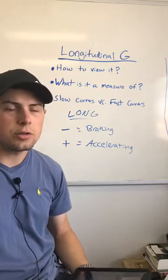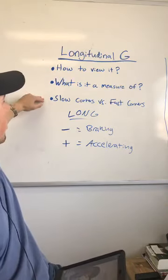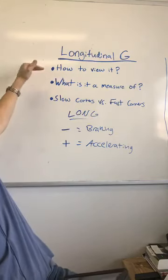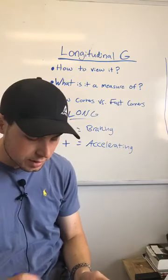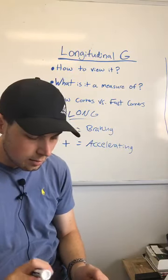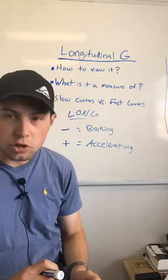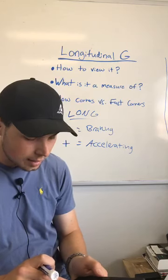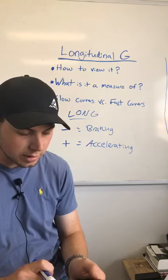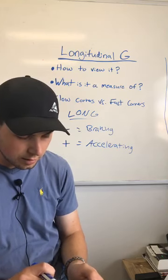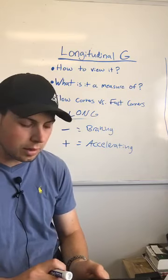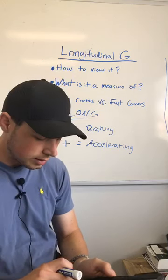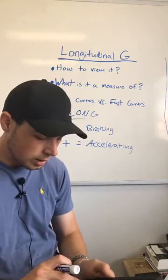Let's talk specifically about negative longitudinal G values and then we're going to get into what we want to see in long G in slow corners and fast corners. So now we know how to view it and we know what it's measuring. We were at Charlotte Motor Speedway this past weekend. I've selected a really simple track layout so we can see longitudinal G. I've selected long G right here in the middle of the screen and the coloring changes: green is positive acceleration, red is negative acceleration, orange is closer to zero, and yellow is basically zero acceleration.